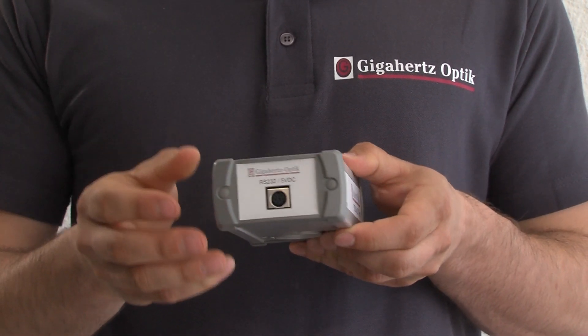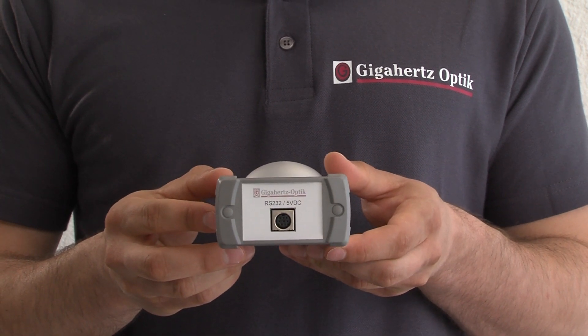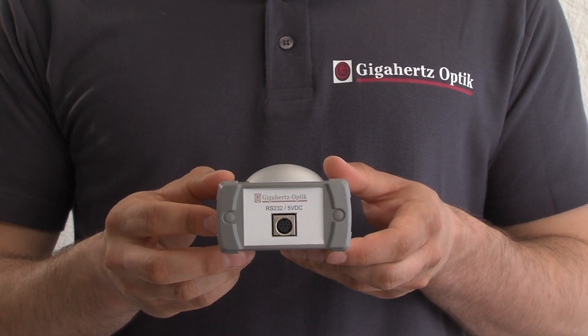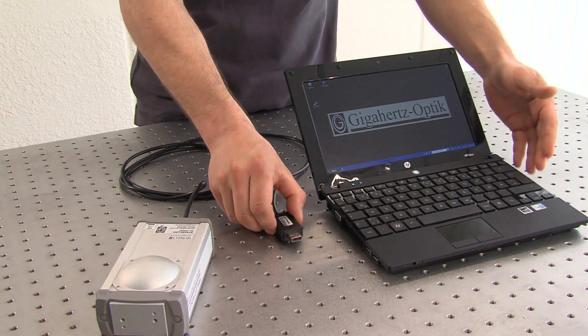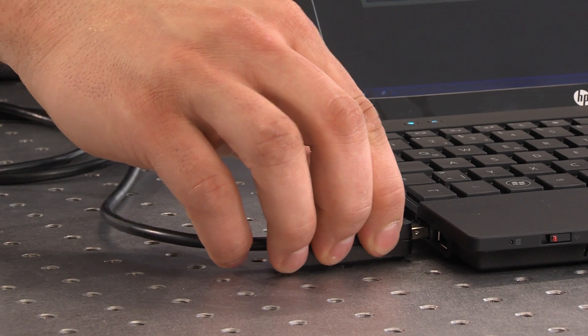All functions are controlled through an efficient microprocessor, which also stores the calibration data. The BTS256 LED Tester connects to the USB interface of the PC.